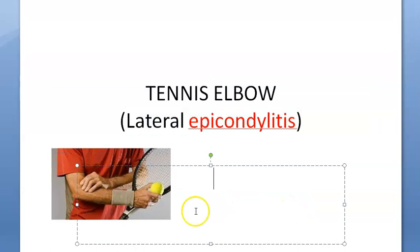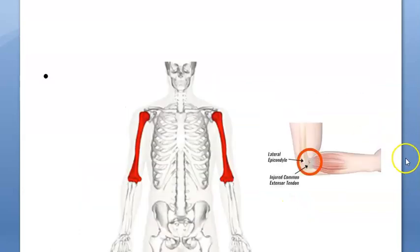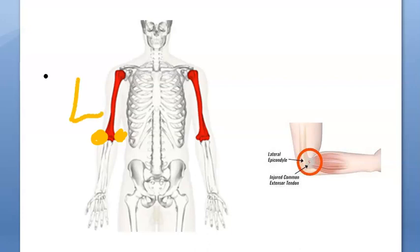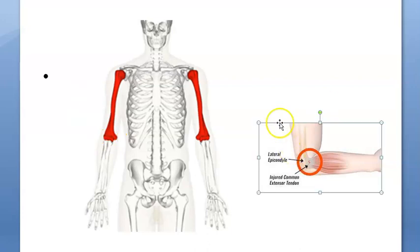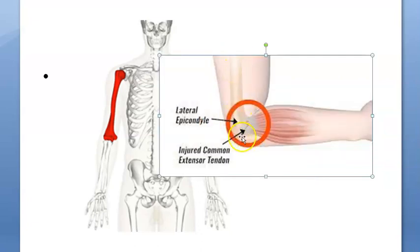The technical term for tennis elbow is lateral epicondylitis. The epicondyle of the humerus has two parts: the lateral epicondyle and the medial epicondyle. In tennis elbow, we are concerned with the lateral epicondyle.